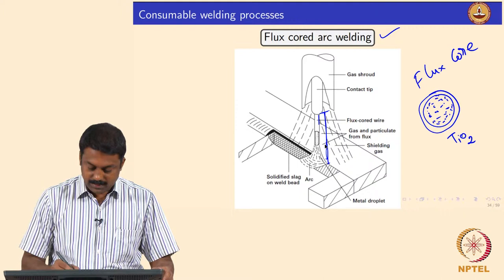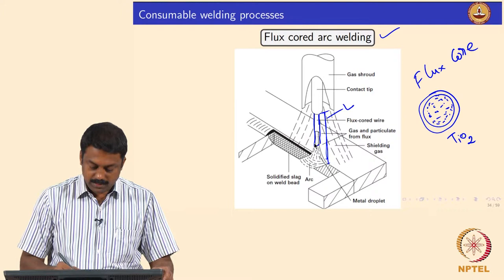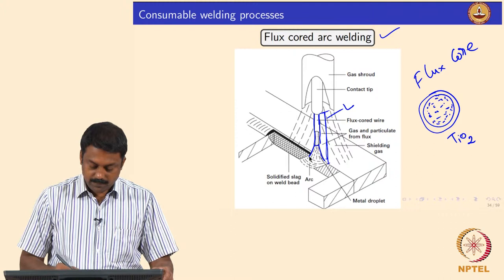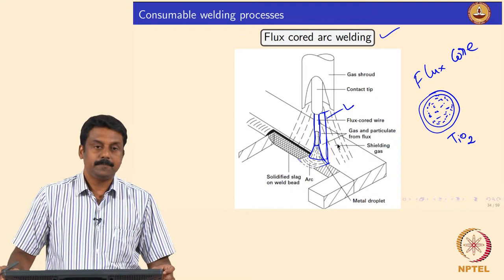This is your contact tip to workpiece distance L. You have the flux cored electrode where the flux is inside and the metal sheath is outside. You strike an arc; if it is self-shielded, the flux burns to generate carbon dioxide. During this process the flux melts, the liquid droplet transfers, the liquid composition changes based on flux decomposition, and then oxides melt and form a slag on top.